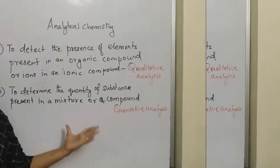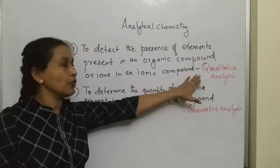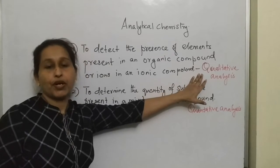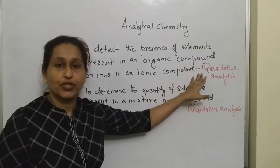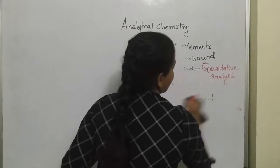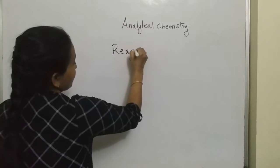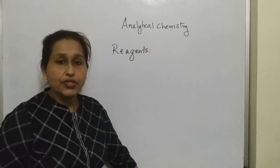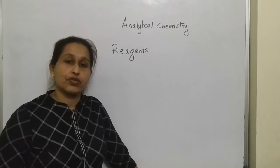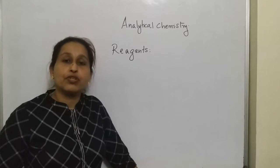This year, we don't study quantitative analysis — we'll study only qualitative analysis. To carry out qualitative analysis, we have to do chemical tests. For doing chemical tests, we need reagents. Reagents are chemical substances which, when they react with other substances, give characteristic changes, or we'll say visible changes.